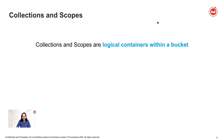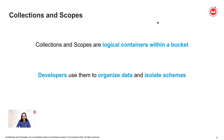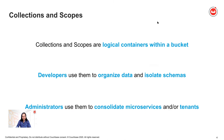So what are collections and scopes? Collections and scopes are logical containers within a bucket. Today in a Couchbase cluster you create a bucket, which is basically a physical container, and then you start storing your documents inside the bucket. With collections and scopes you will have two additional levels of containers within a bucket. If you're an application developer you can use these to organize your data inside a bucket and to isolate your schemas — by schemas I mean types of documents. Schemas do not imply any rigidity of fields as you still get to enjoy the flexibility of JSON.